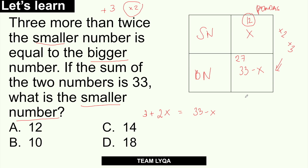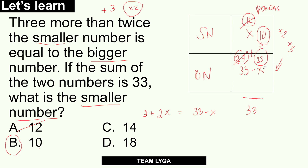Since the result was too large, I'll go down to 10. Let's check: 10 times 2 is 20, plus 3 is 23. And if you notice, 10 plus 23 is 33. So that's correct! The smaller number is 10.